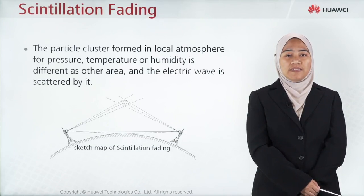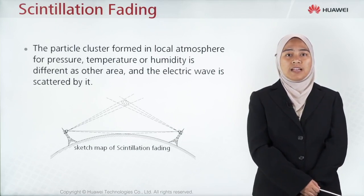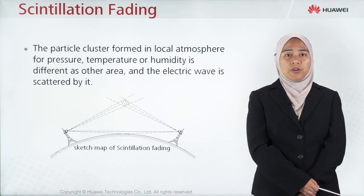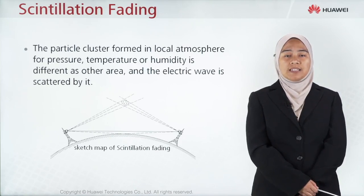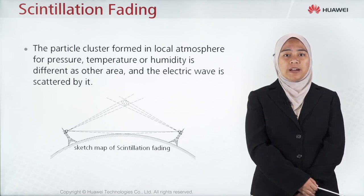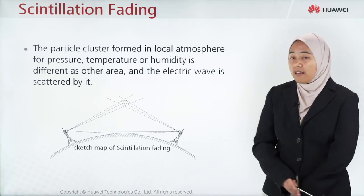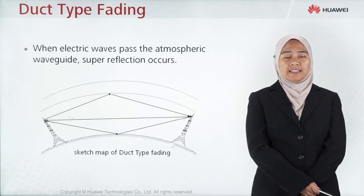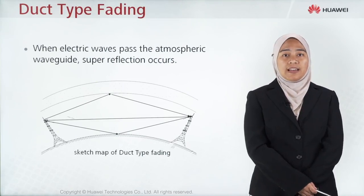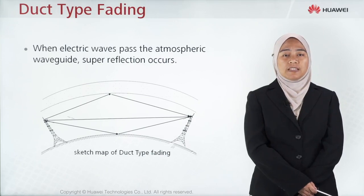Next is the scintillation fading. A particle cluster formed in a local atmosphere where pressure, temperature, or humidity differs from other areas causes the electric wave to be scattered, as shown in this figure. Next is the duct-type fading — when electric waves pass through the atmospheric waveguide, superreflection occurs.